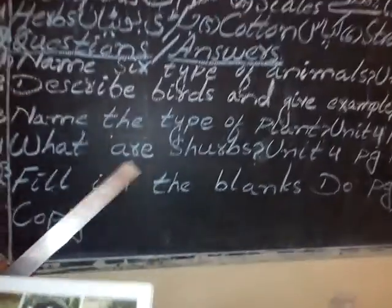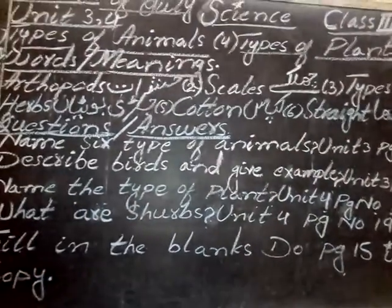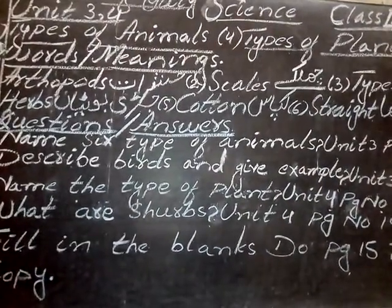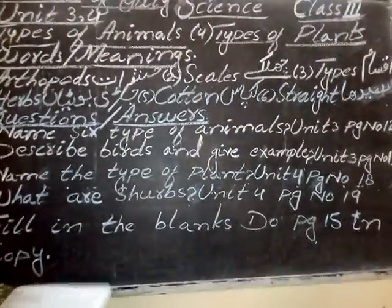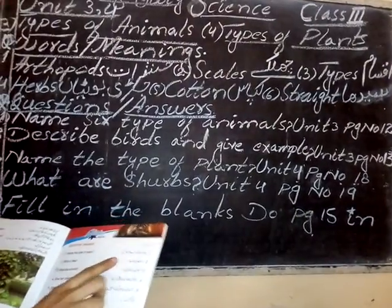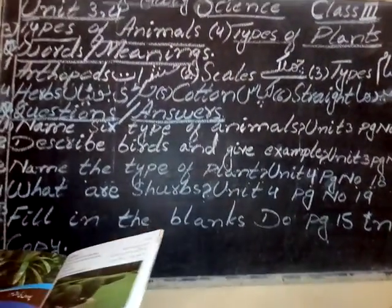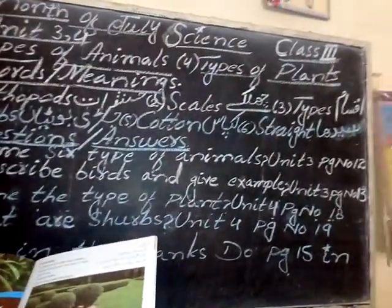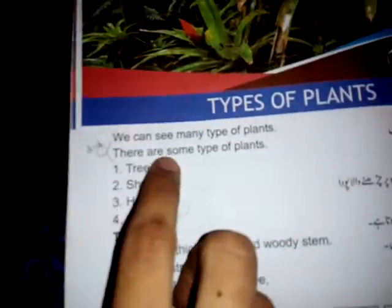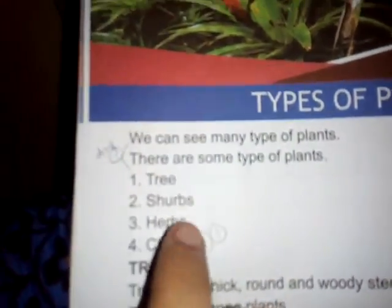What are the types of plants? Unit number four, page number 18. There are some types of plants: trees, shrubs, herbs, climbers.